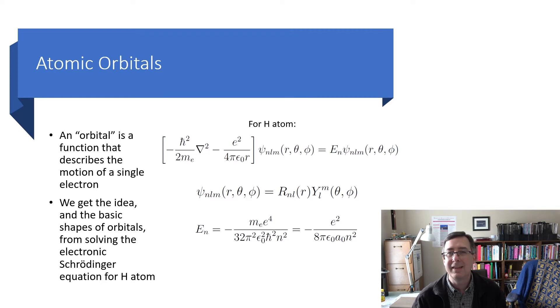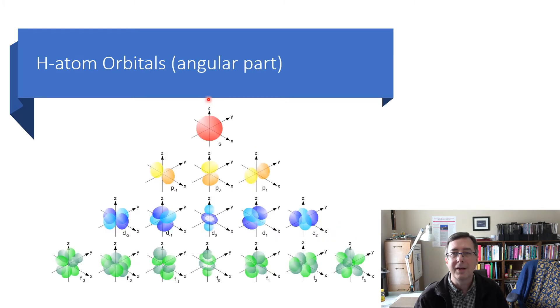Who's to say that these orbitals are good shapes to think about for other atoms? Well, it turns out we have some experience that they are basically good to think about for other atoms. But they're no longer exact solutions for any other atom. They only are really exact for a hydrogen atom.